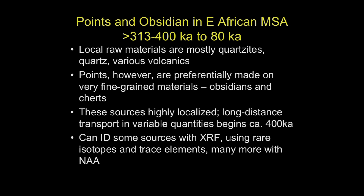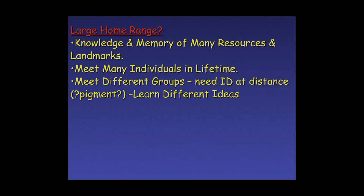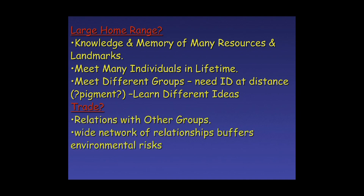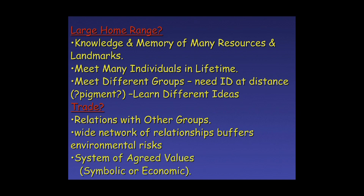The local raw materials are mostly quartzites and quartz in many of these East African sites, including Aduma, Elorga Sali, and the Kapthurin. But the points are preferentially made on very fine-grained materials that have to be brought from far away. If you have a large home range, you know a lot about the environment and you're going to meet a lot of individuals — people from different groups going to these sources. You need some way to identify yourself as a friend, so it's not surprising that pigment goes along with this. This wide network of relationships provides a way to deal with climate variability and buffer against environmental risks.